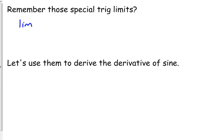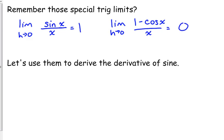Okay, those special trig limits. The limit as h approaches 0 of sine of x over x, that looks terrible. What was that limit? 1. And then our other one was the limit as h approaches 0 of 1 minus the cosine of x over x, and that was equal to 0.